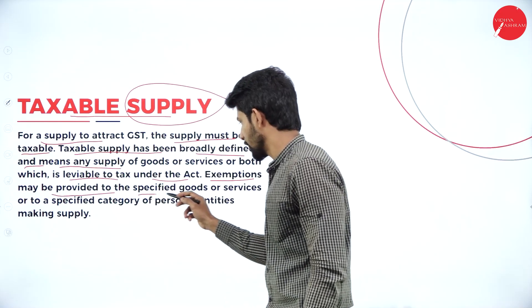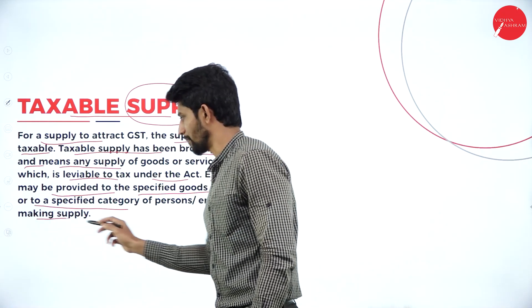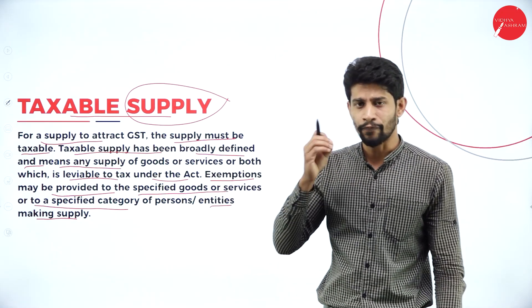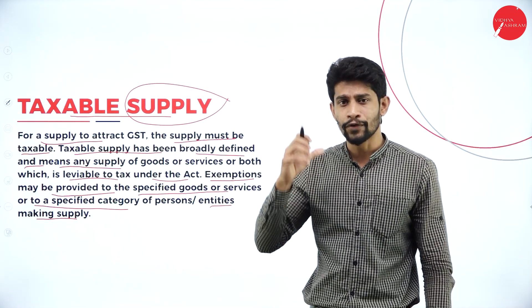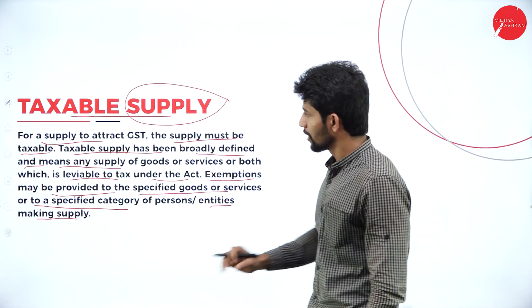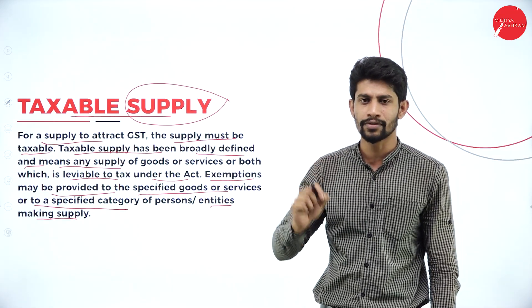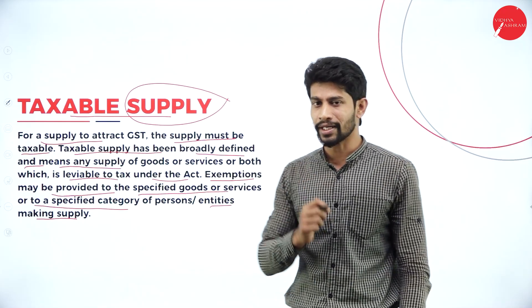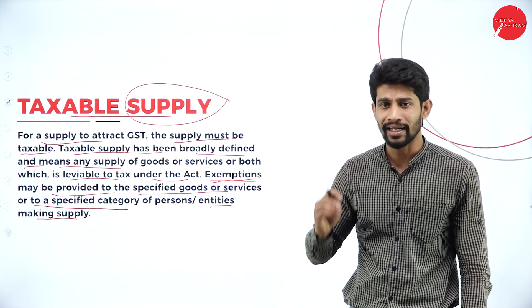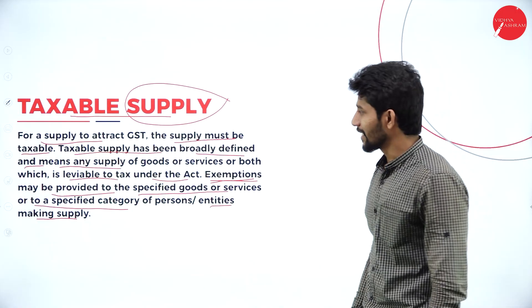Exemptions may be provided to specified goods or services or to a specified category of persons or entities for making supplies. Exemptions are provided for a few goods and services, so those goods and services are exempt from tax. Also, on a few goods and services, the rate of GST will be very less — that means the rate of GST will be 0%. So taxable supply is nothing but if the goods or services attract any percent of tax — 5%, 12%, 18%, or 28% — then that will be considered as taxable supply. A few taxable supplies are exempted, meaning the rate of GST will be 0% or that particular goods or services will be exempted from tax.